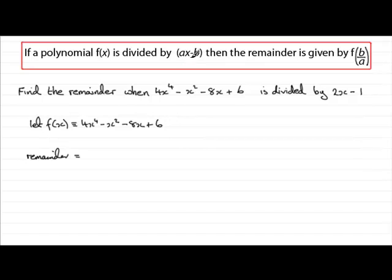Well, by the remainder theorem, you can see that the a corresponds to the 2 and the b corresponds to the 1. So you get the remainder by doing f of b over a. So that would be b, which is 1, over a, which is 2, f of a half. So we need to do f of a half.